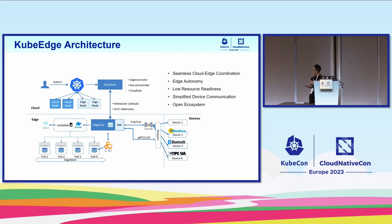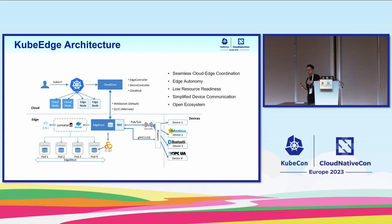For IoT devices, there are a lot of devices talking with different IoT protocols. People really want to decouple their application development from the protocol, so we brought the device mapper layer to provide an option to define all device data with standard messages. Your application is able to access device status and device data with standard messages without needing to integrate the device protocol directly.